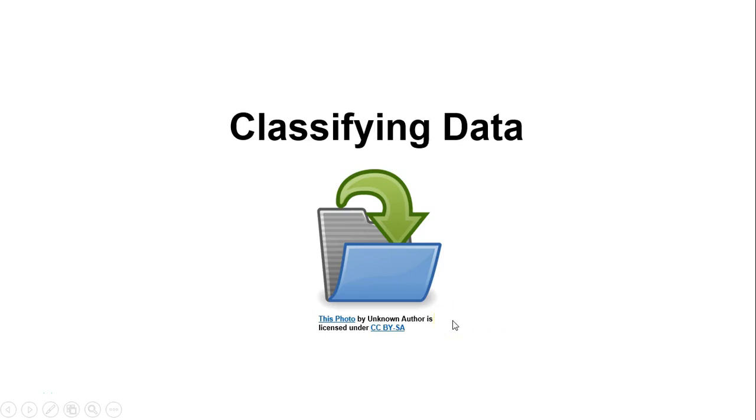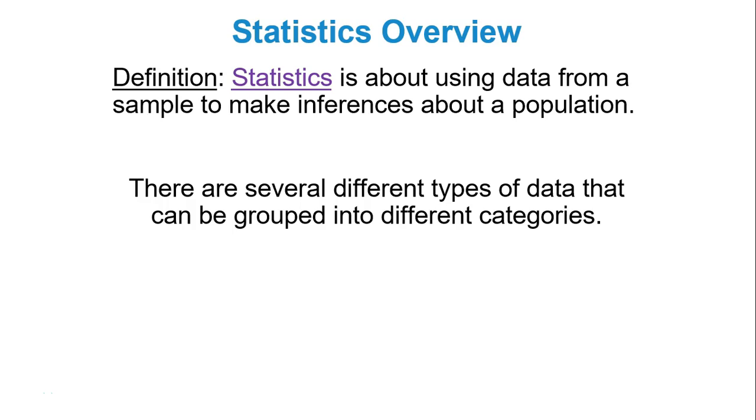Our first stop in this module will be classifying data. So first off, statistics by definition is using data from a sample to make inferences about a population. When we say population, I'm talking about everything being considered or everything being talked about, like for instance everyone in the United States. And when I say sample, I'm talking about some of the population.